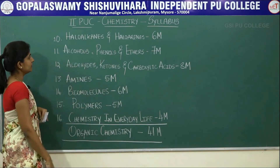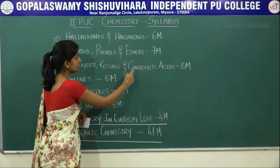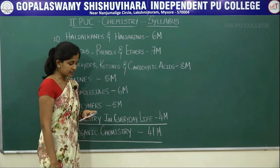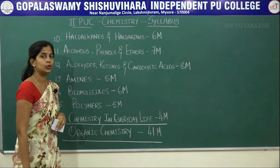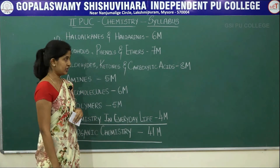The second chapter of organic chemistry is alcohols, phenols, and ethers. Its total weightage is 7 marks, divided into a 2-mark question and a 5-mark question.